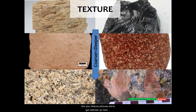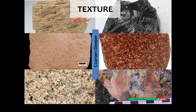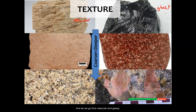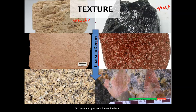Here are the texture pictures. We've got vesicles — you can see the bubbles in this pumice. This is what glassy looks like; you can see how this obsidian looks like shards of shattered, broken glass. As we go from vesicular and glassy through aphanitic to porphyritic to phaneritic to pegmatitic, we're going coarser in grain size, and that also means deeper. Pyroclastic rocks are the least deep, and it goes in order of coarser to deeper.